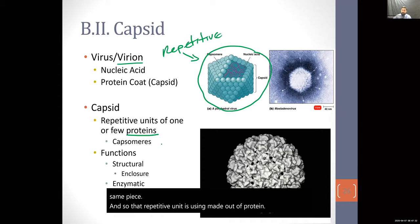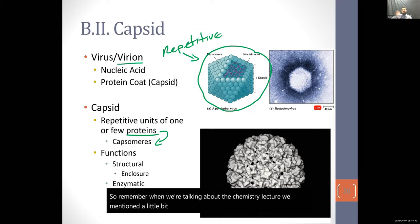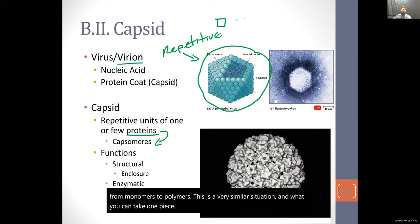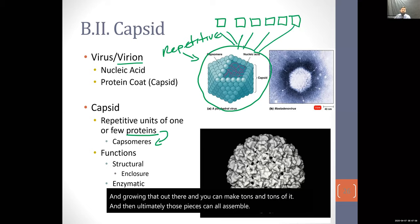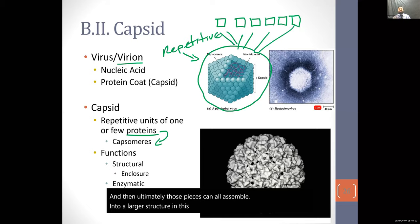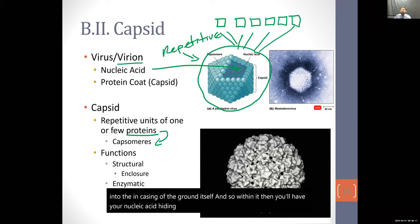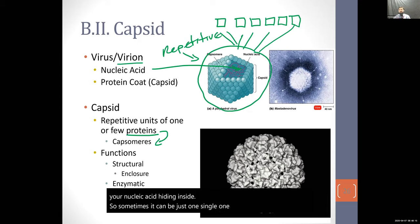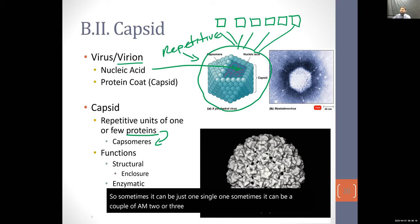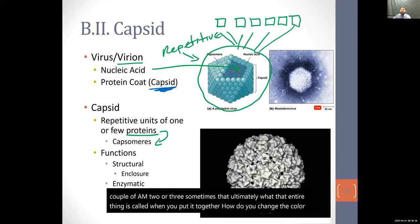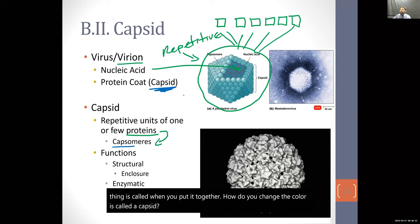Those repetitive units are made out of protein and are called capsomeres. Similar to dehydration synthesis assembling monomers into polymers, you can take one piece and make tons of it, and those pieces assemble into a larger enclosure — the casing of the virion itself, with your nucleic acid hiding inside. When you put it all together, the entire structure is called a capsid. Capsomeres are the repetitive units that assemble into the capsid.